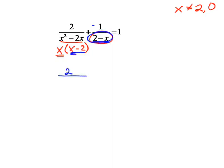So it's going to look like 2 over x times x minus 2 plus negative 1 over x minus 2 equals 1. Now my common denominator is x times x minus 2.